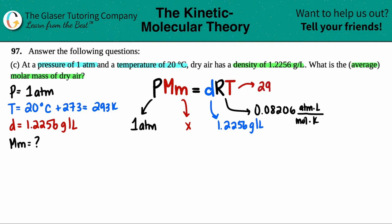So let's give it a shot. We have 1, oh this is going to work out lovely. 1 times x, so we don't have to do any multiplication or anything on the left side. 1.2256, we have the R value of 0.08206, and then we have 293. Beauty. So we have x equals, drum roll please...